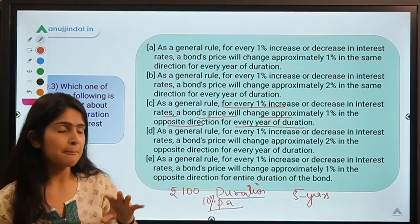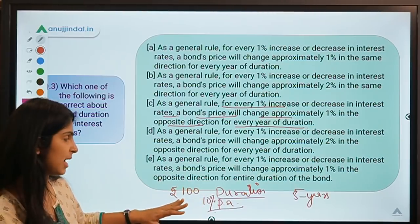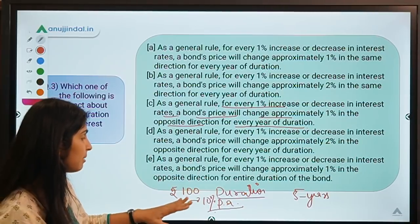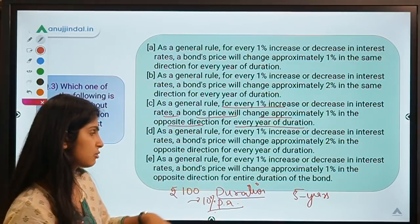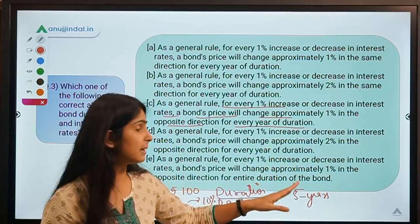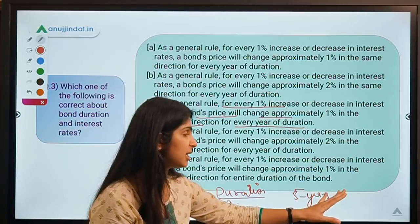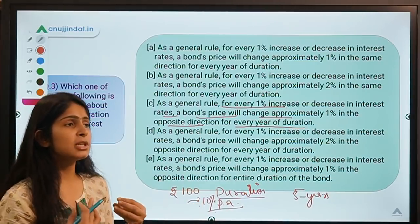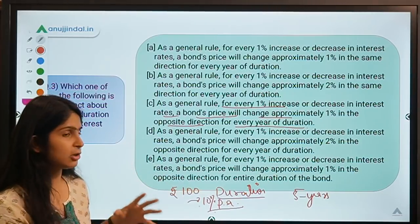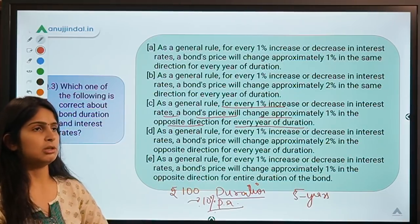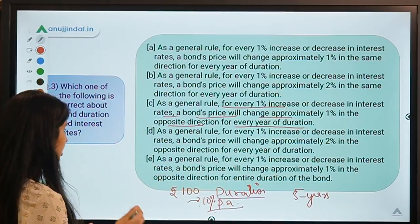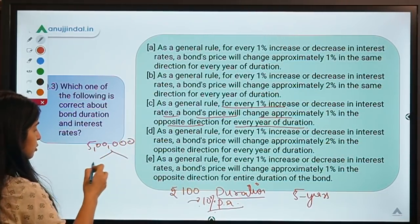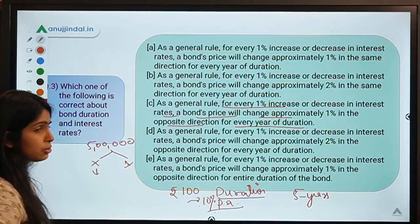The time in which the investor gets back the worth of their money is called duration, and whatever they receive after that is excess return. An analogy: a car worth 5 lakh has a manufacturer-stated life of 10 years. X who uses the car heavily may recover the worth of their money in 7 years, while Y who uses it rarely can carry on for 12 years. Similarly, in bonds, when an investor recovers their invested money, that time period is called duration.